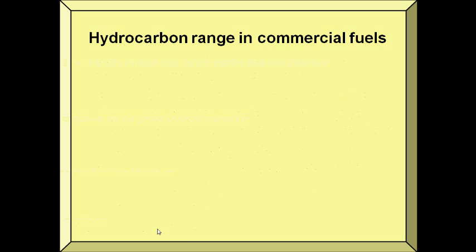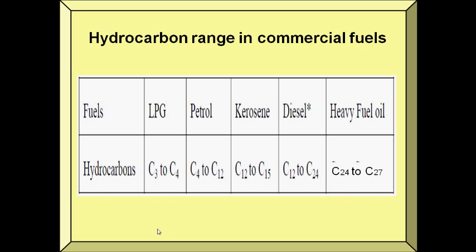Here is the hydrocarbon range in commercial fuels: LPG has 3 to 4 carbons, petrol has 4 to 12 carbons, kerosene has 12 to 15 carbons, diesel has 12 to 24 carbons, while heavy fuel oil has 24 to 27 carbons.